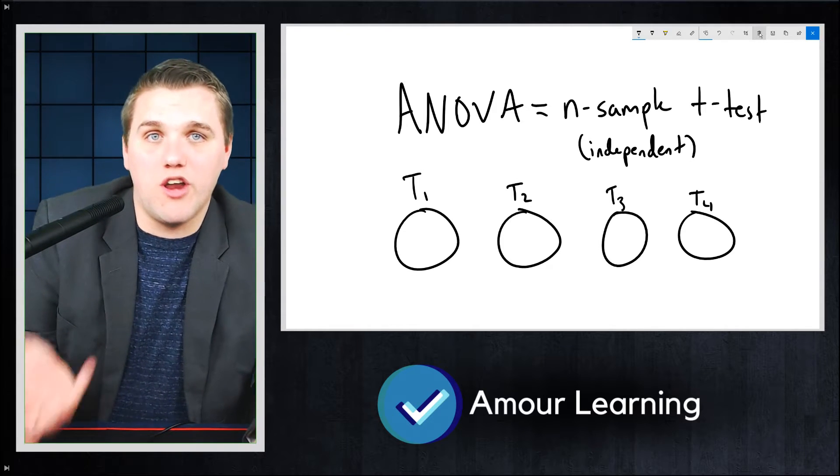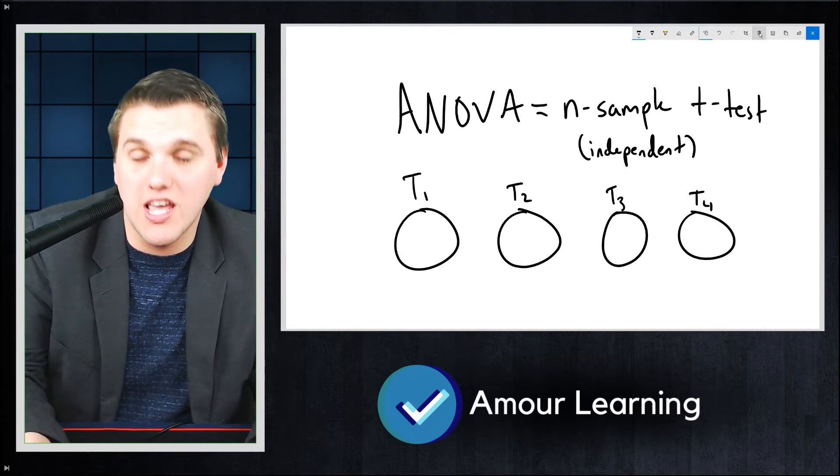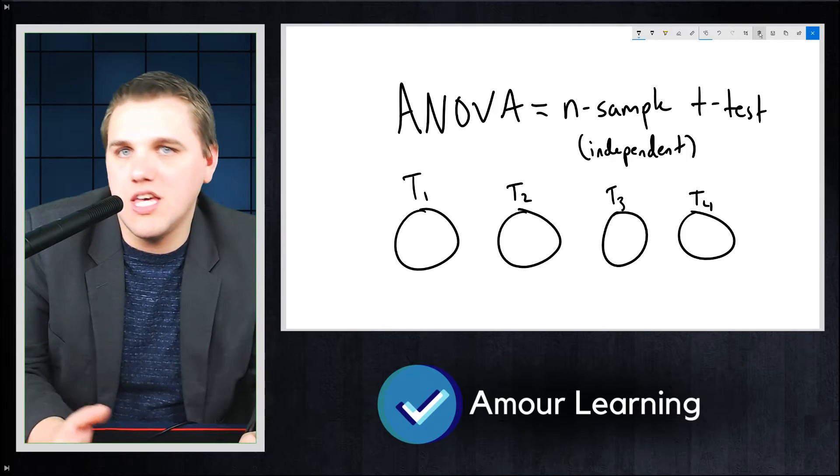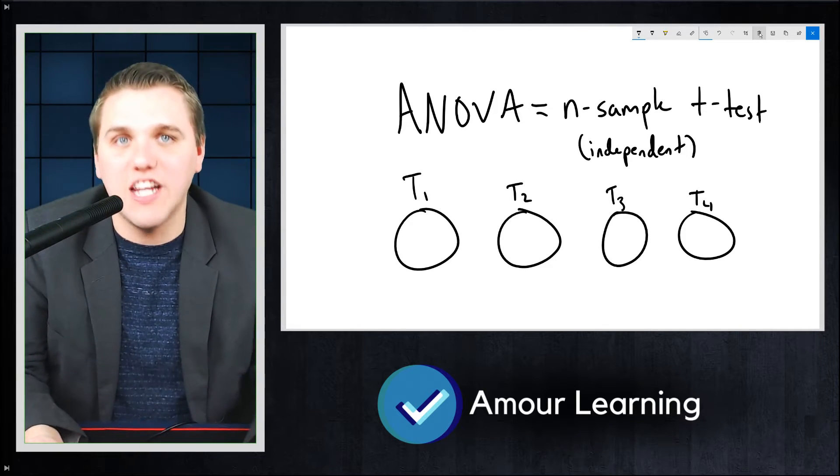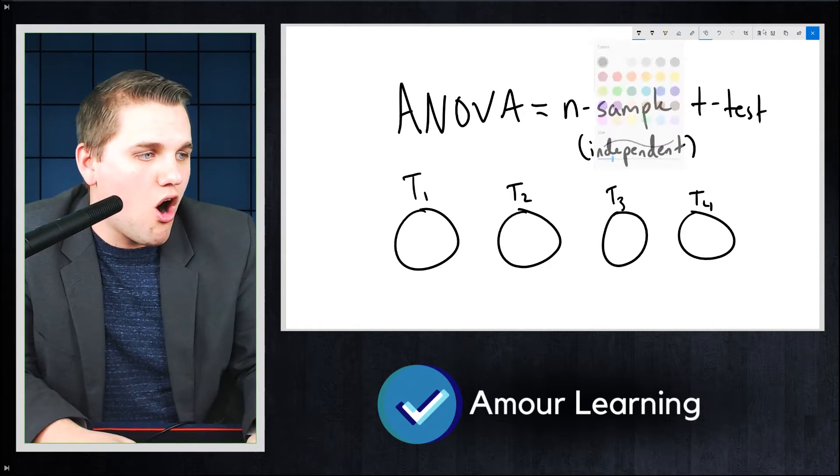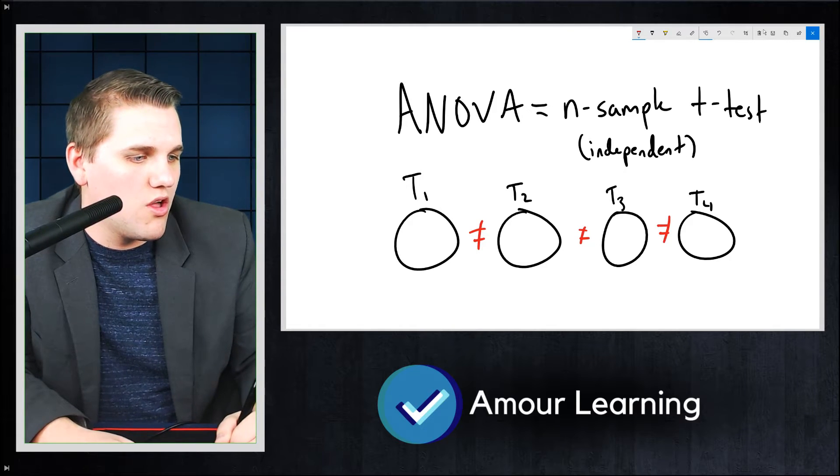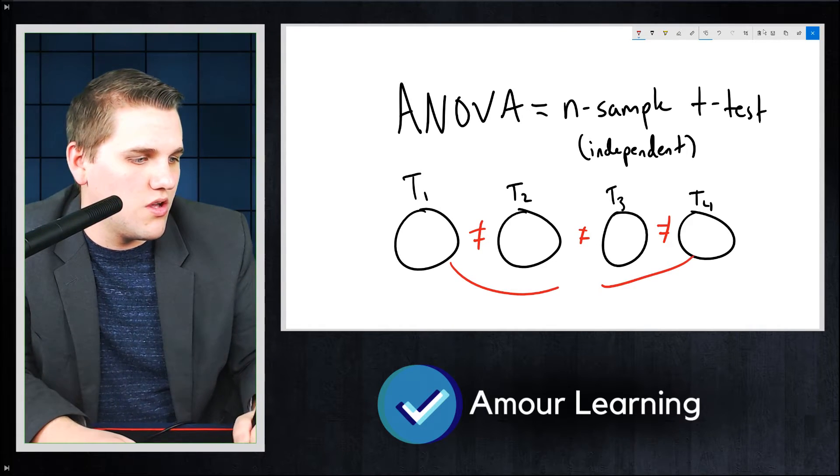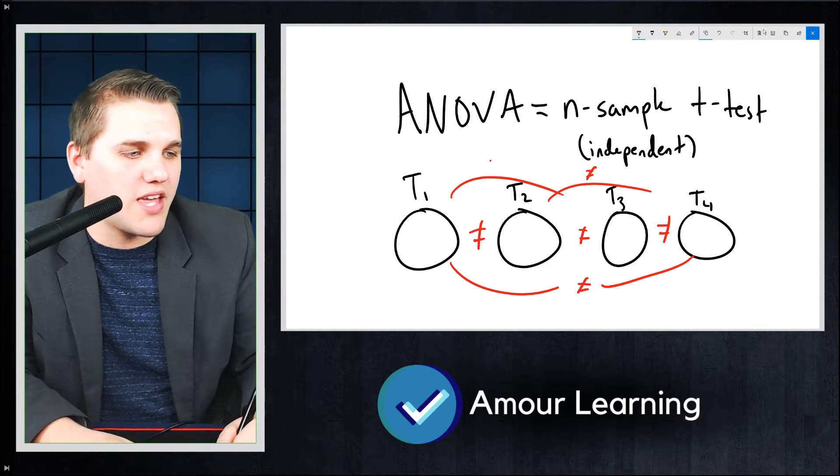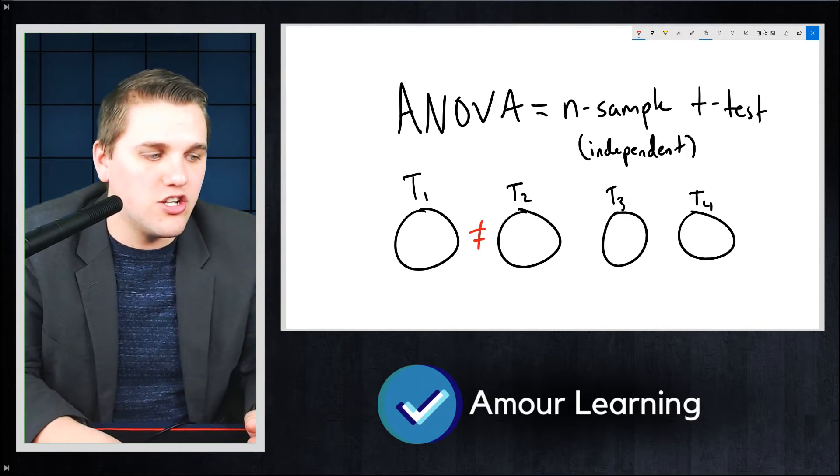You're either going to get a yes or a no. If you get a no, that just means they're all basically more or less the same teaching methodologies. If you get a yes, however, that means that in general these teaching methodologies are different from each other, meaning that maybe treatment one, treatment two, treatment three, and treatment four are all super different from each other. But the ANOVA test doesn't guarantee us that they're all in general not equal.